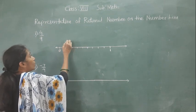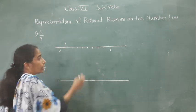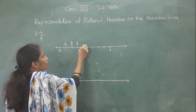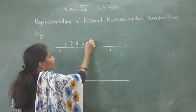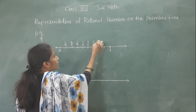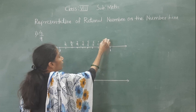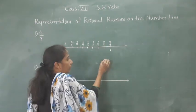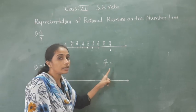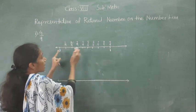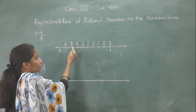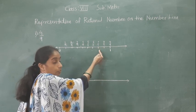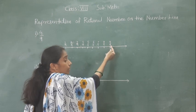The first part will be 1 upon 9. Total parts are 9, so the first part is 1 upon 9, the second part is 2 upon 9, the third part is 3 upon 9, the fourth part is 4 upon 9, the fifth part is 5 upon 9, the sixth part is 6 upon 9, the seventh is 7 upon 9, the eighth is 8 upon 9, and the ninth equal part is 9 upon 9 — which equals 1. So 9 divided by 9 is 1. These are the 9 equal parts.